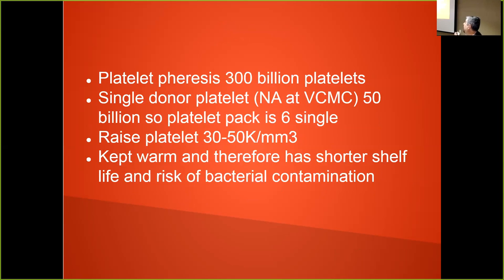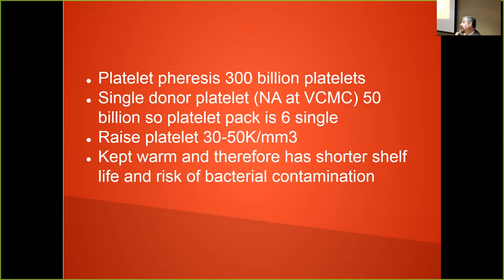Pheresis platelets have about 300 billion platelets and will raise your platelet count about 30 to 50 — it's variable. A single-donor platelet from one unit is about 50 billion, so six single donors equal one pheresis donor. Platelets are kept warm and have a shorter shelf life; they'll eventually agglutinate, and the risk of bacterial contamination with platelets is higher than with red cells. Transfusion-related bacterial infection is another complication of platelet transfusion.